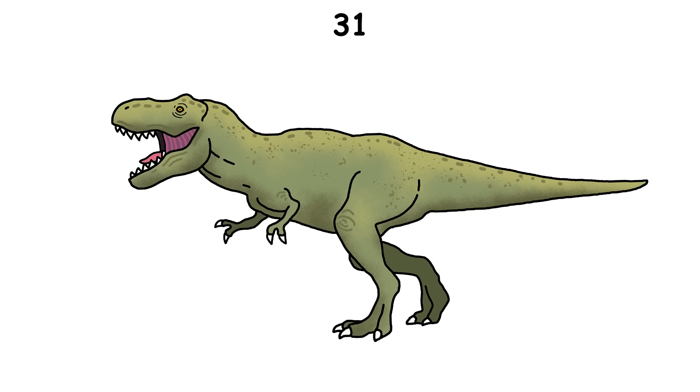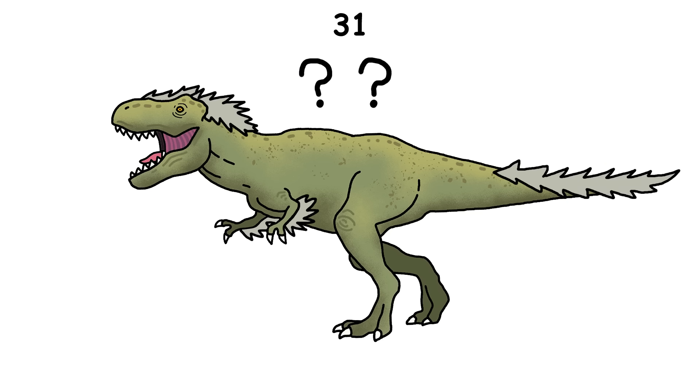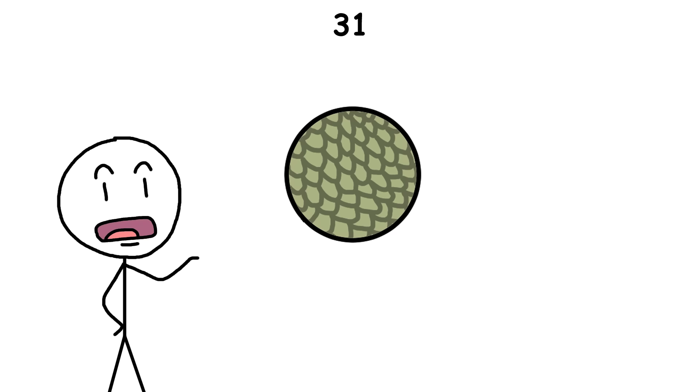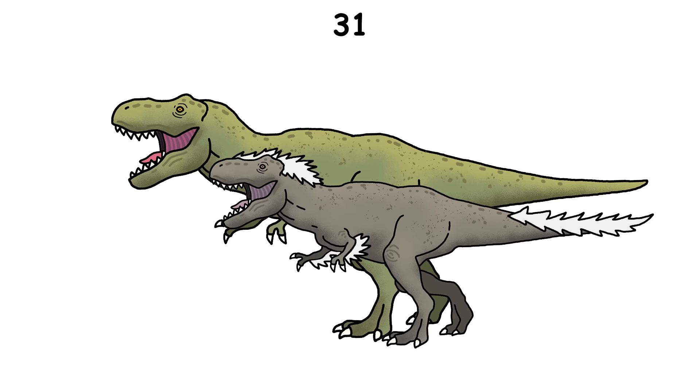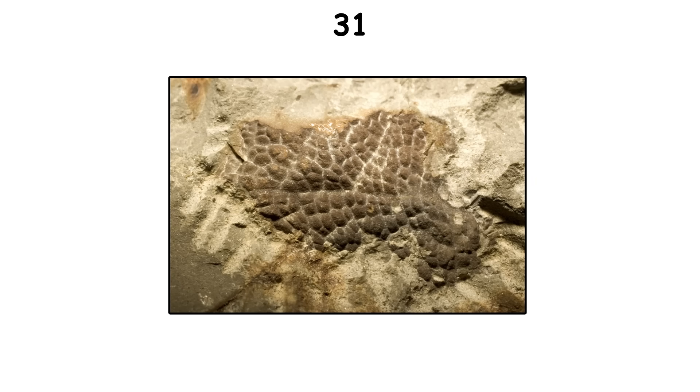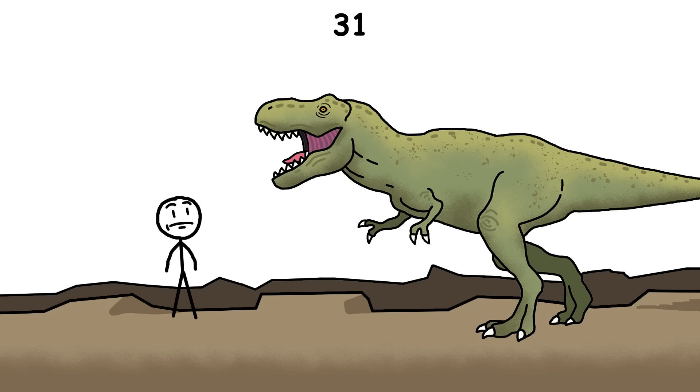Some people think that T. rexes actually had feathers, but we don't know for sure. The evidence we have suggests it was mostly scaly, even though some of its earlier, smaller relatives had feathers. So it's possible that T. rex had some too, especially as a baby. So far, however, the few fossilized skin patches we've found show scaly skin with no feathers, and the size of the T. rex suggests that it wouldn't need them for thermoregulation.